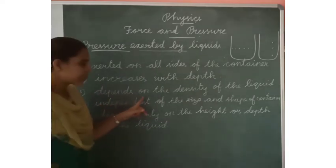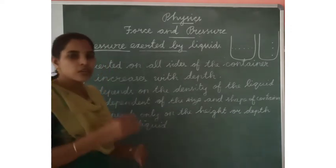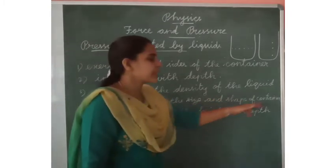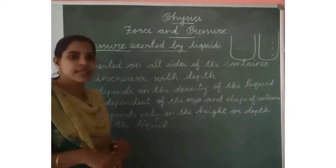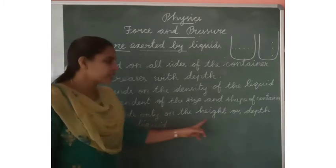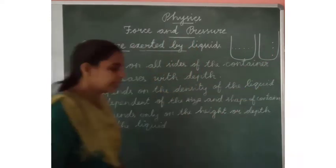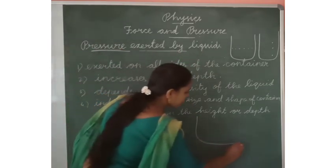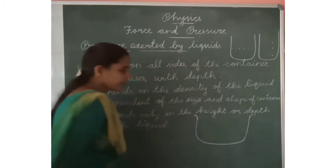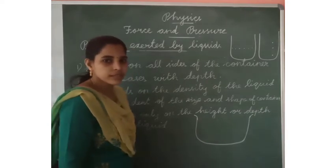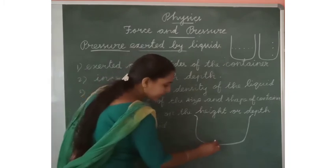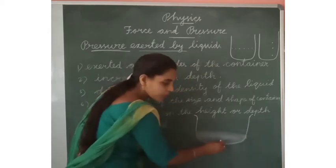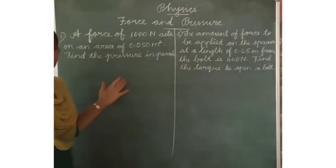The liquid pressure depends on the density of the liquid. The liquid pressure increases with the density of the liquid. It is independent of the size and shape of the container. It depends only on the height or depth of the liquid. In the bottom of the container, the liquid pressure will be increased.